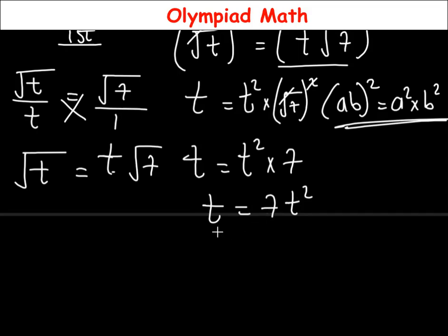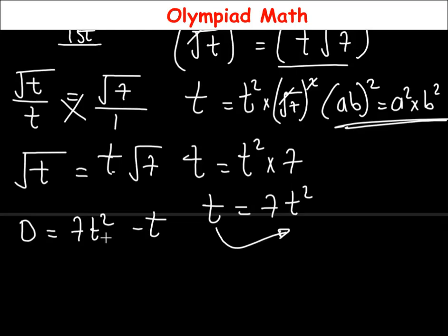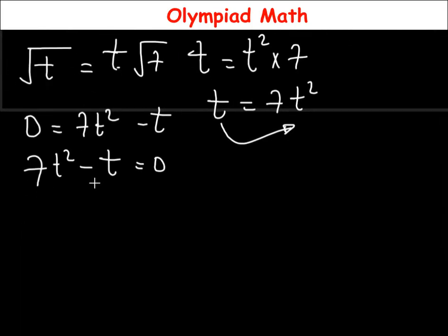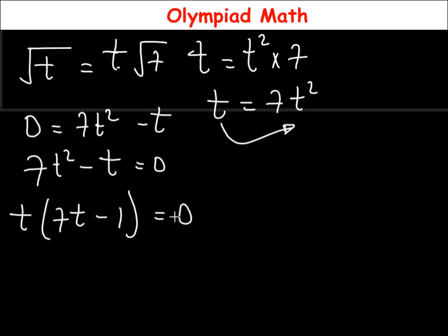At this junction, we can move t to the other side of the equation so that here becomes 0. If plus t crosses the equality sign, it becomes minus t. So we have 0 is equal to 7t² minus t. There is a common factor of t, so factorizing: 7t² divided by t is 7t, and minus t divided by t is 1. This gives us t(7t − 1) = 0, so t equals 0 or 7t − 1 equals 0.